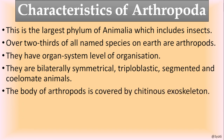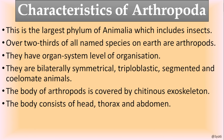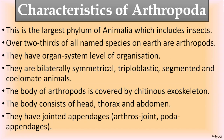The body of Arthropods is covered by a chitinous exoskeleton. Take the example of cockroach - their body is covered by a hard chitinous exoskeleton, which provides mechanical support. Chitin is a type of polysaccharide, so that exoskeleton is made up of chitin. The body consists of head, thorax, and abdomen. They have jointed appendages - that's why the phylum is called Arthropoda. Arthros means joint and poda means appendages.